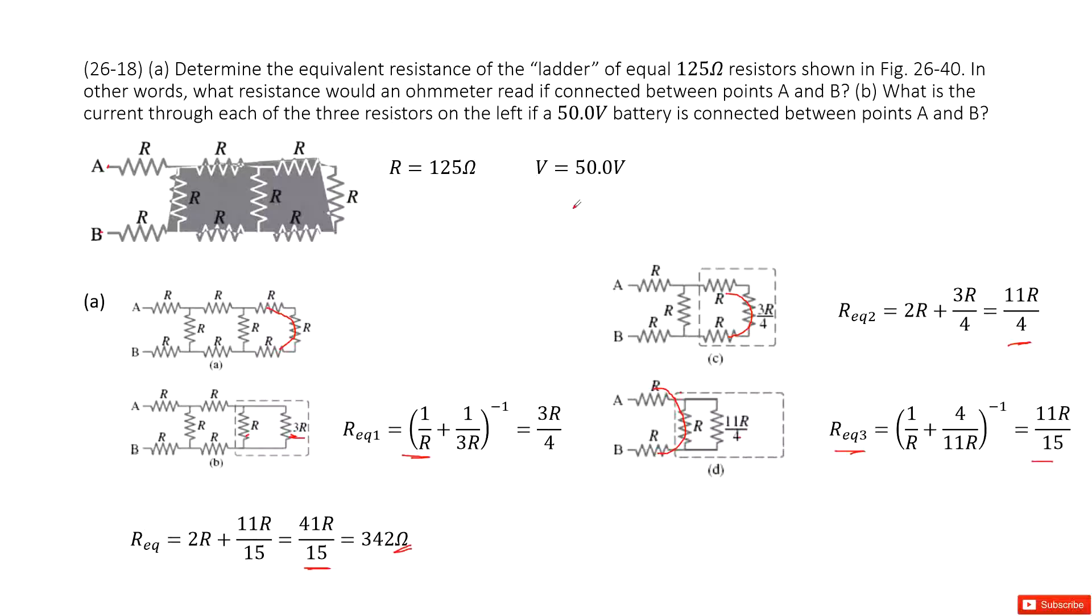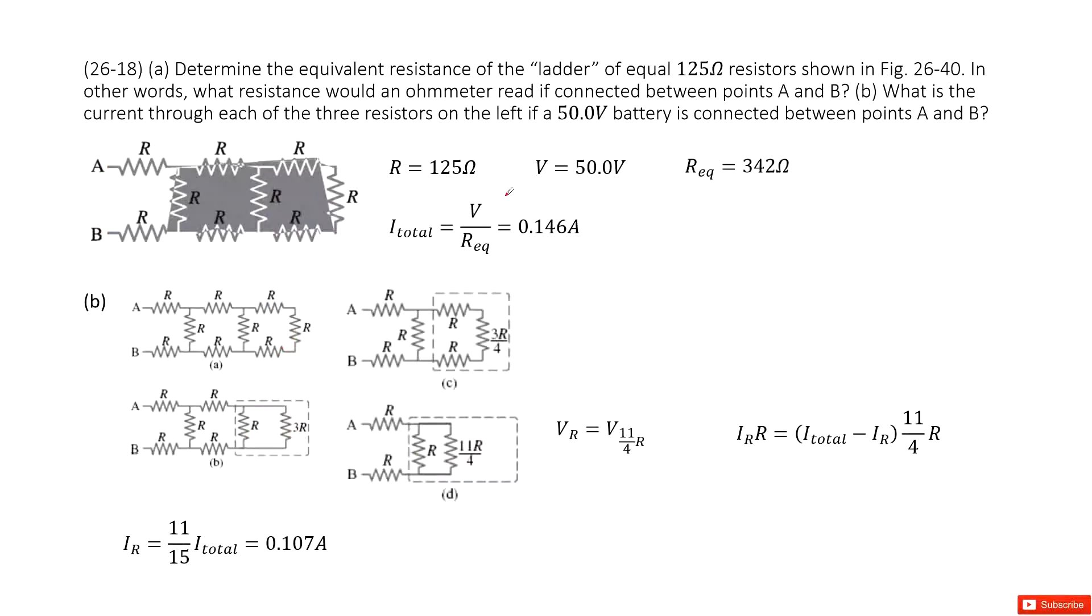The next question asks you, what is the current that goes through each of the three resistors on the left if a 50V battery is connected between A to B? We get the voltage between A and B as 50 volts, and we know the equivalent resistance as 342 ohms.